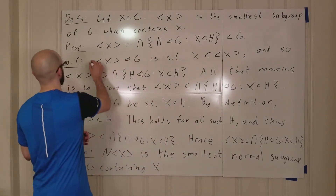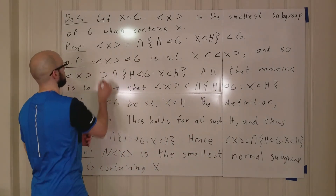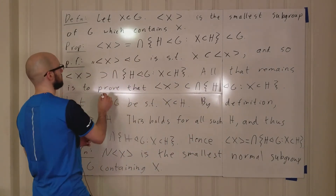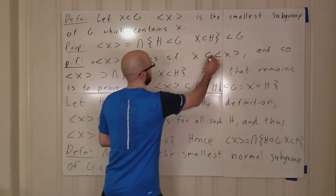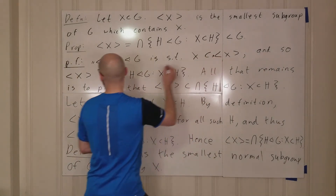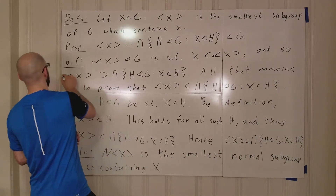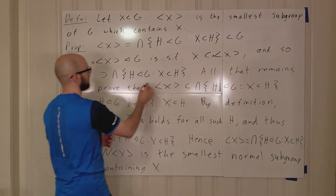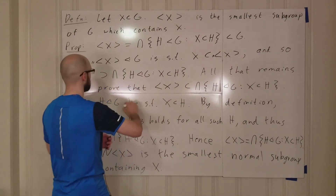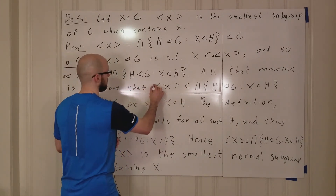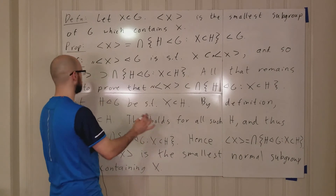We'd do the same proof, just with a little 'n' here and put that 'n' everywhere for normal subgroup.